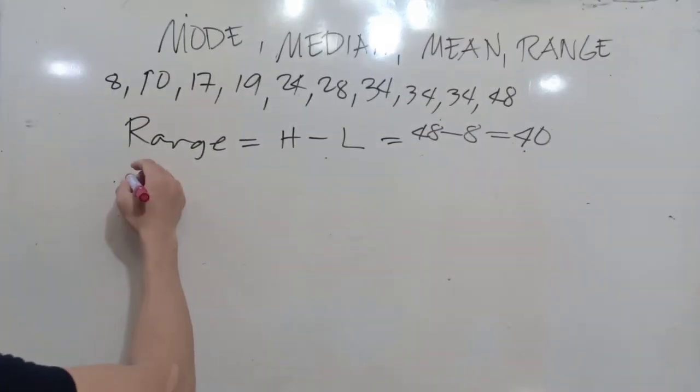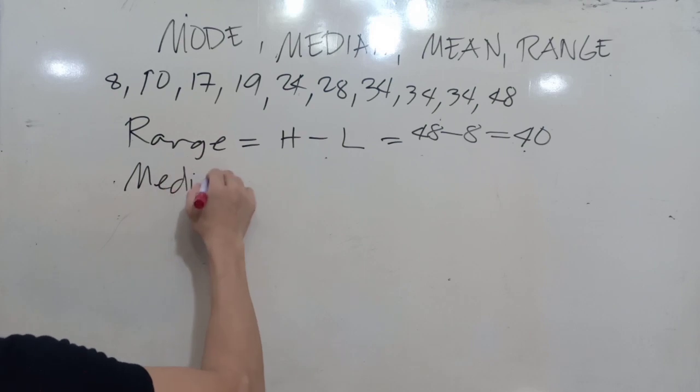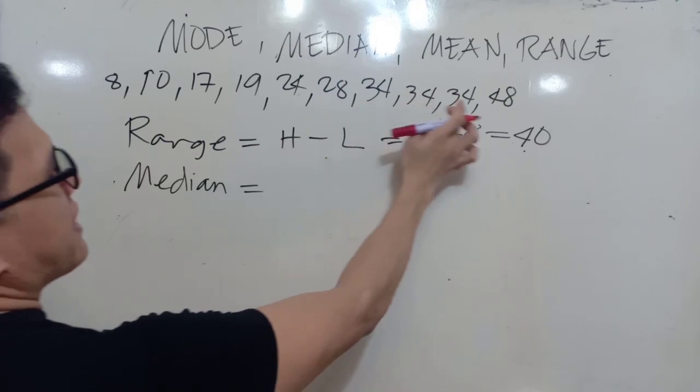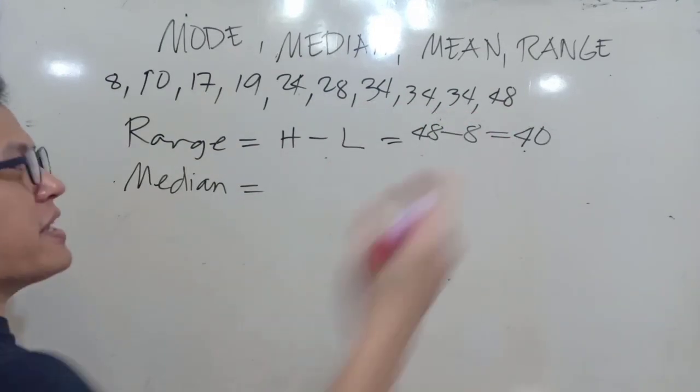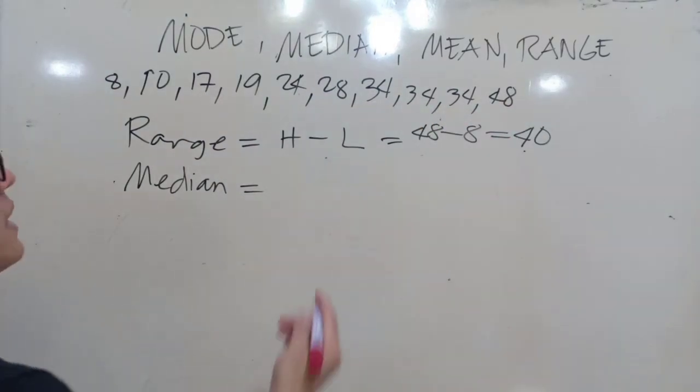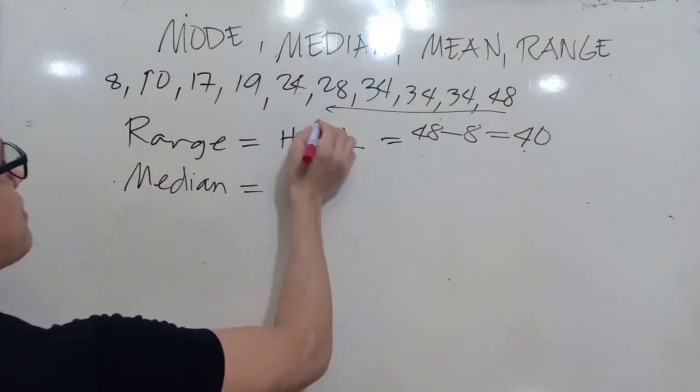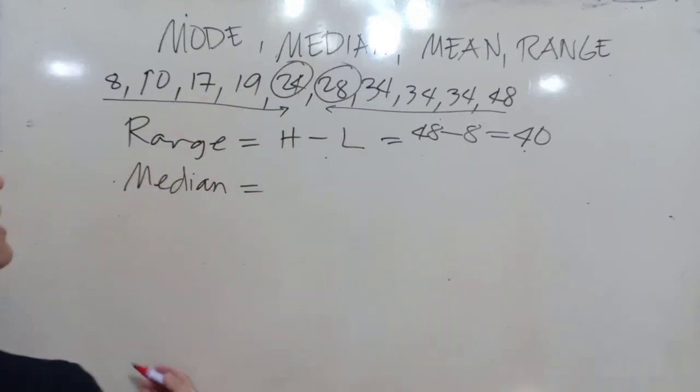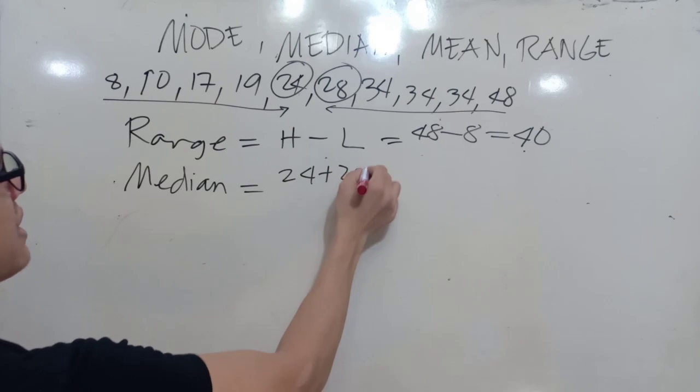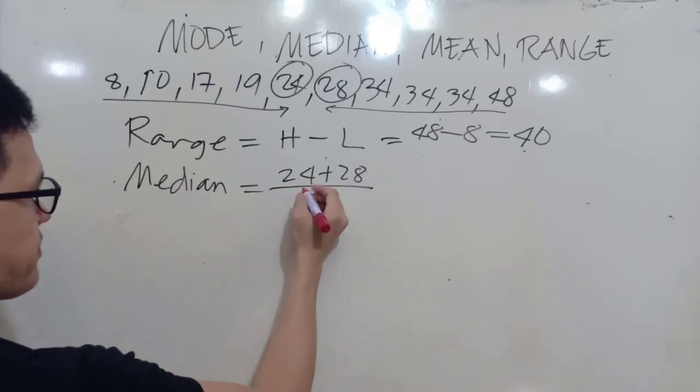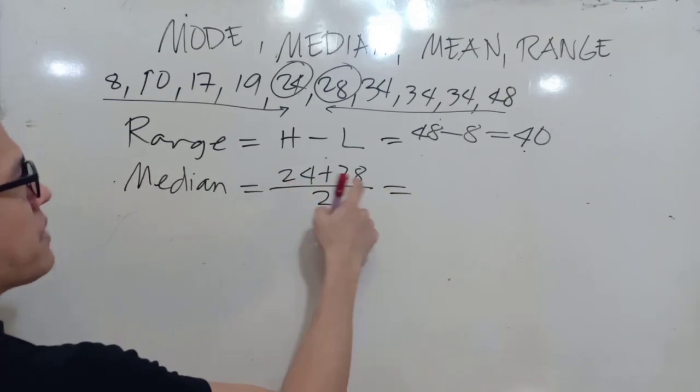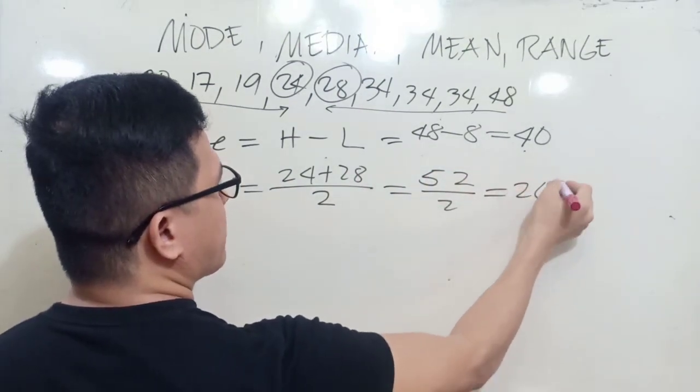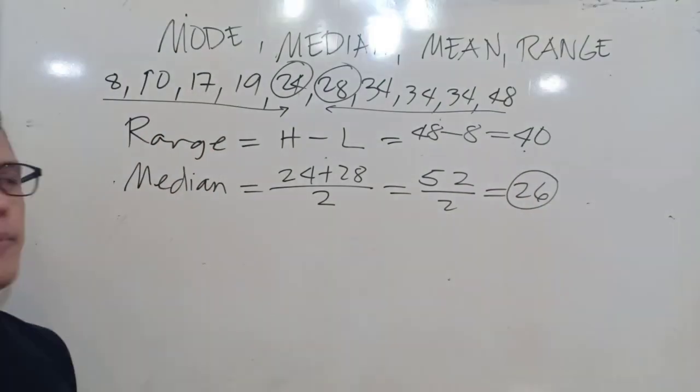Next one, our median first. Let's do median first. Our median is 1, 2, 3, 4, 5, 6, 7, 8, 9, 10. So it's 10, it's an even number of data. So count 1, 2, 3, 4, 5 until the middle. These are the two middlemost. So we'll just have to add that, 24 plus 28, and so this one is divided by 2. And so this one is 24 plus 28, we have 52 over 2. So that is 26. Our median is 26.